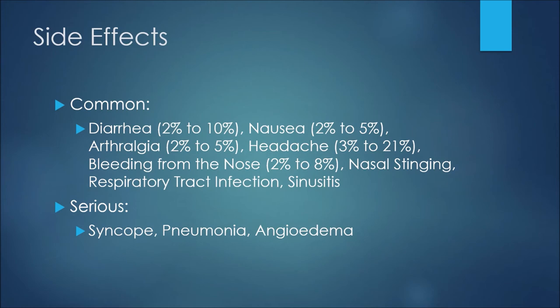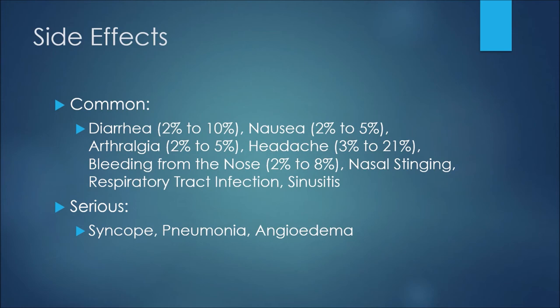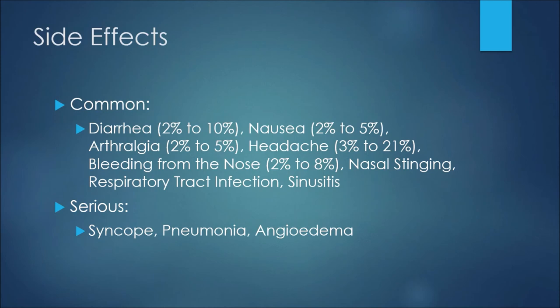As with all medications, there are some side effects or adverse reactions that patients may experience while using Budesonide. Just keep in mind that some of these percentages may seem high, but we are including the oral Budesonide as well. Diarrhea may happen 2 to 10% of the time. Nausea may happen 2 to 5% of the time. Arthralgia, or joint pain, comes in at 2 to 5% as well. 3 to 21% of patients may experience a headache, and 2 to 8% may experience bleeding from the nose or nasal stinging.